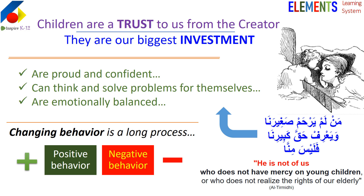Our behaviors affect children both positively and negatively. Positive behaviors include respecting, patience, endurance, and acting in the adult zone — always appropriate to the child's age. Negative behaviors are if we start reacting, if we are harsh, yelling, shouting, humiliating them, or labeling them.